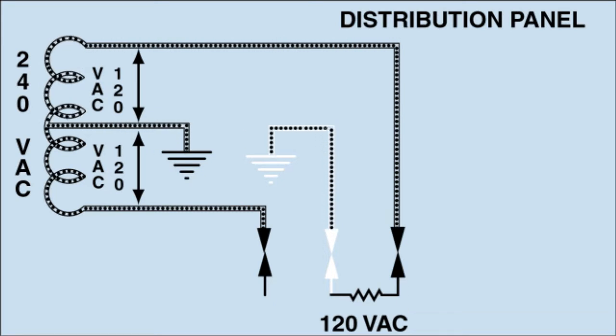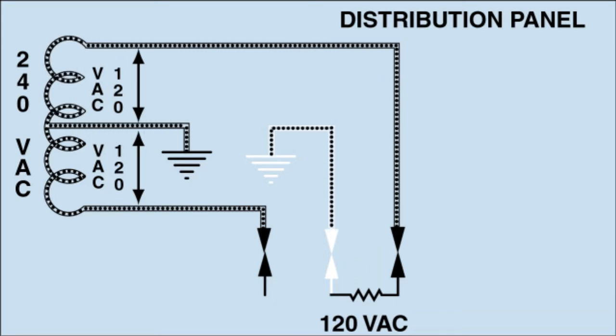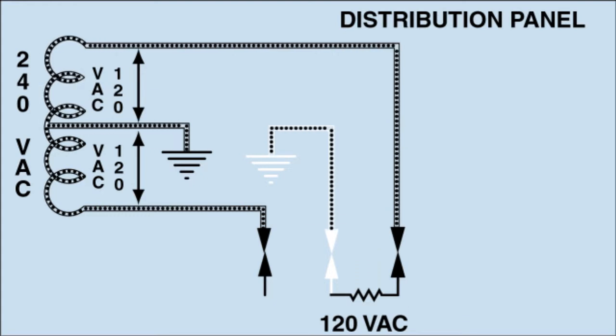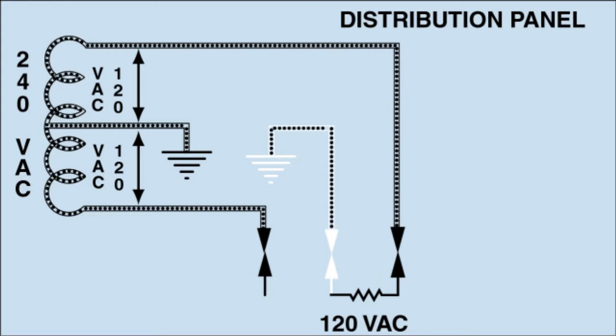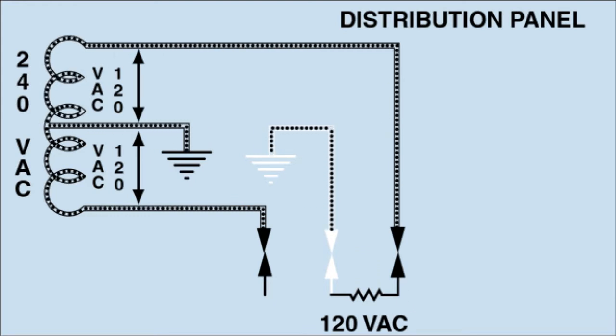Pause the video here if necessary to solidify this idea in your mind. A perfectly balanced distribution panel, which is much more theoretical than practical, will have no current flow in the neutral from the panel to the pole and therefore will waste no power.